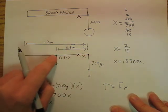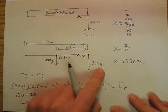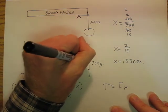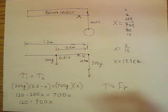So force 1 times radius 1 equals force 2 times radius 2. That means that for this situation, the broom handle weighing 200 grams with a 700 gram mass attached to it is going to have a balance point that's 13.3 centimeters from the end.